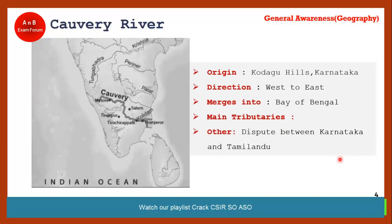The next river is Kaveri, whose origin is the Kodagu hills. It flows from west to east and finally merges into the Bay of Bengal. An important fact about Kaveri is the ongoing water dispute between Karnataka and Tamil Nadu.